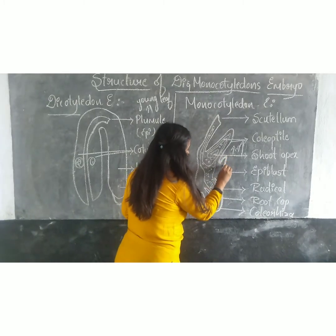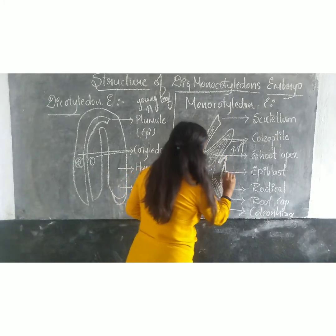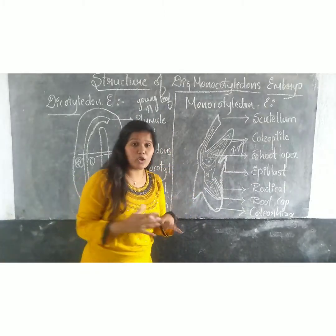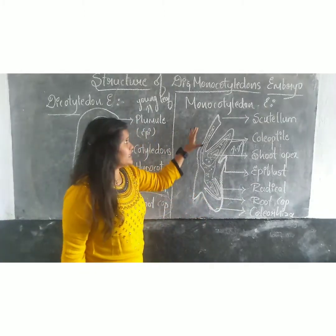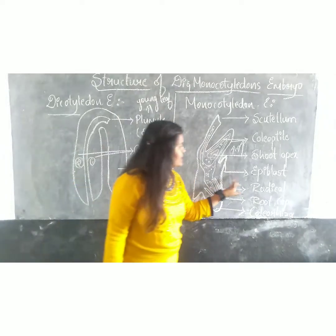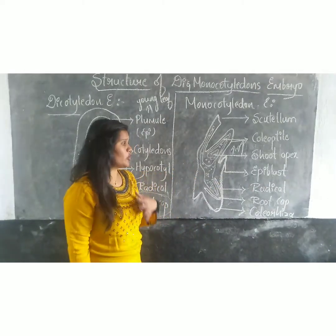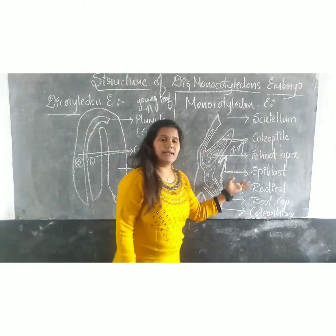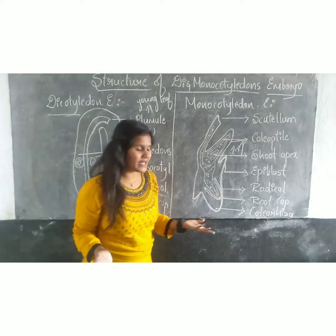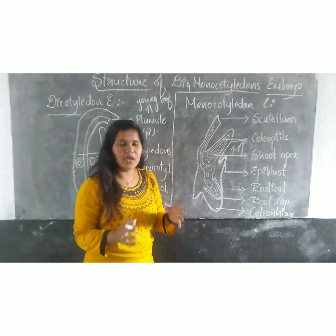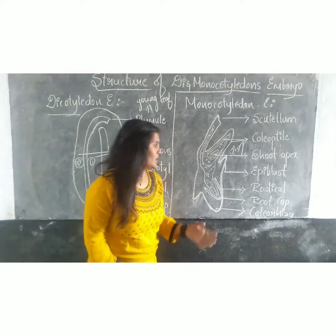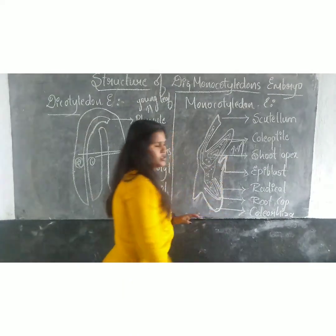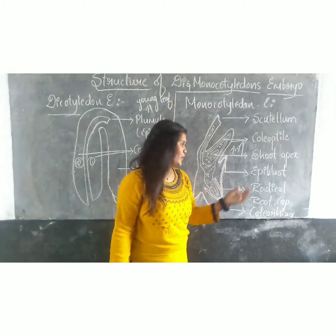Coming to this pointed structure — that is the apiglast. It is a structure which is not present or not existed, because it is a monocotteridon. But this apiglast is the rudimentary structure of the secondary cotteridon. Hence the secondary cotteridon is not present. So this is the apiglast — the pointed structure where no secondary cotteridon is produced.